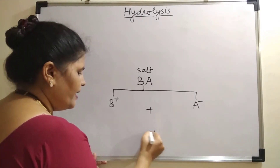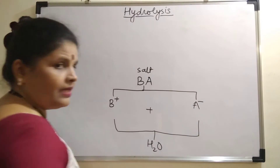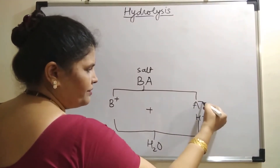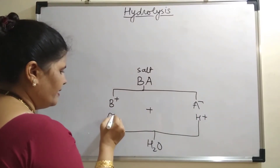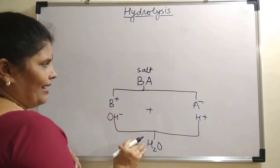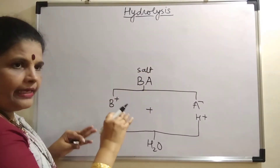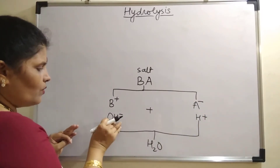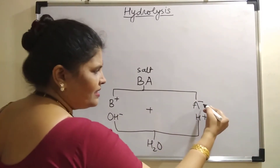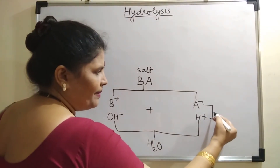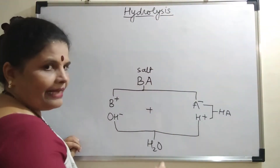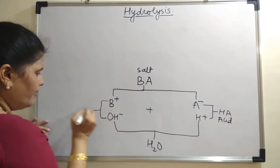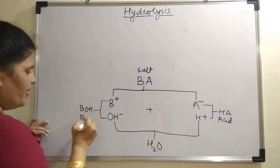Water will give H⁺ and OH⁻ ions. H⁺ will be attracted toward the anion side and OH⁻ toward the cation side. The salt splits into cation and anion form, and water provides its OH⁻ and H⁺ ions. When A⁻ combines with H⁺, it gives HA, which is the acid. And when B⁺ combines with OH⁻, it gives BOH, which is the base.